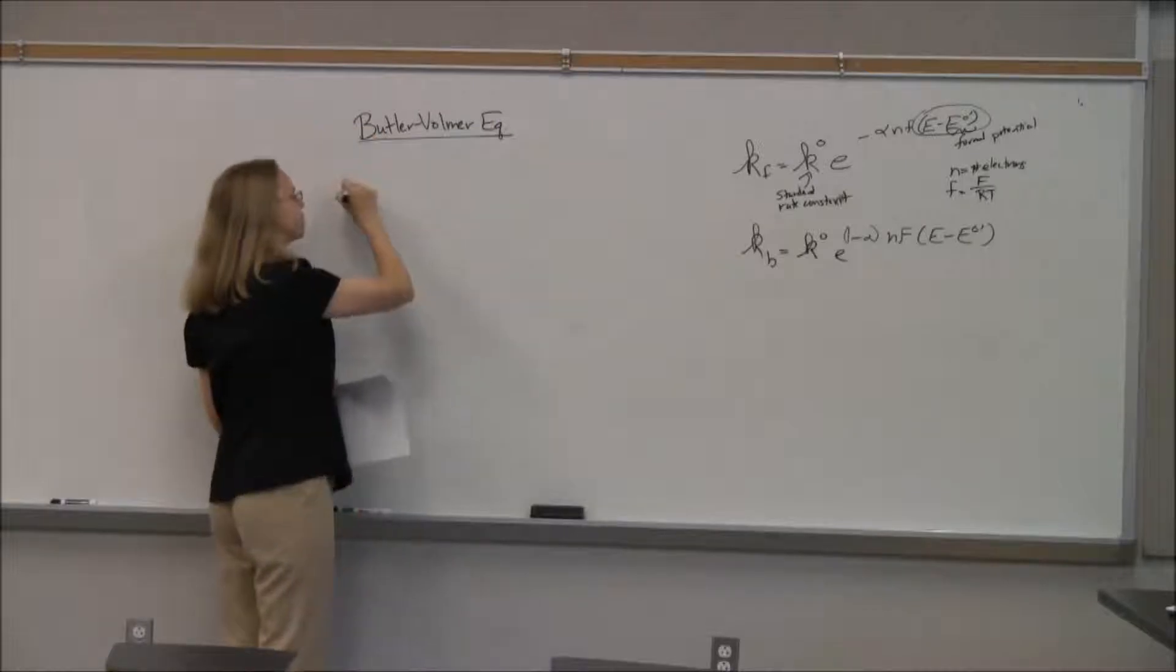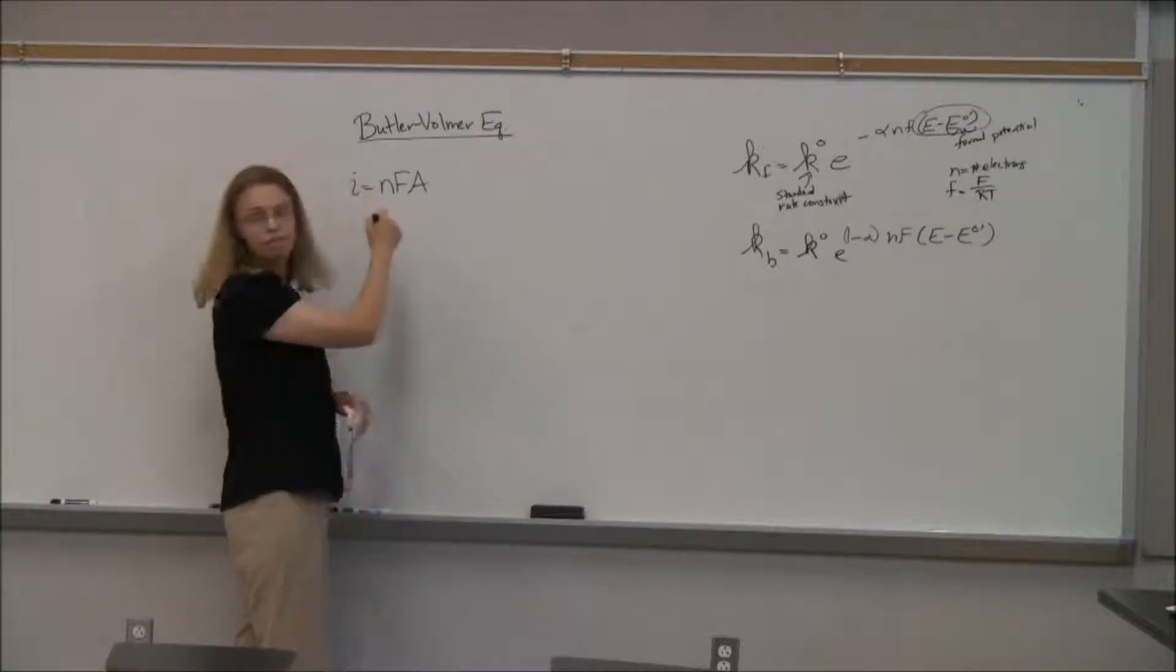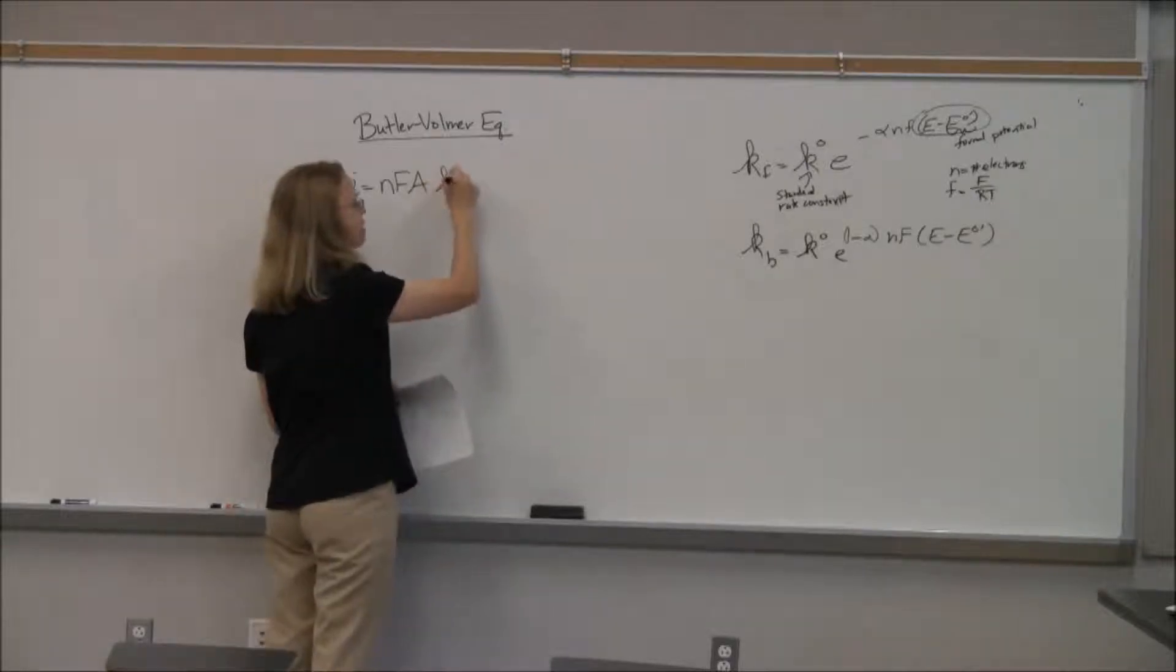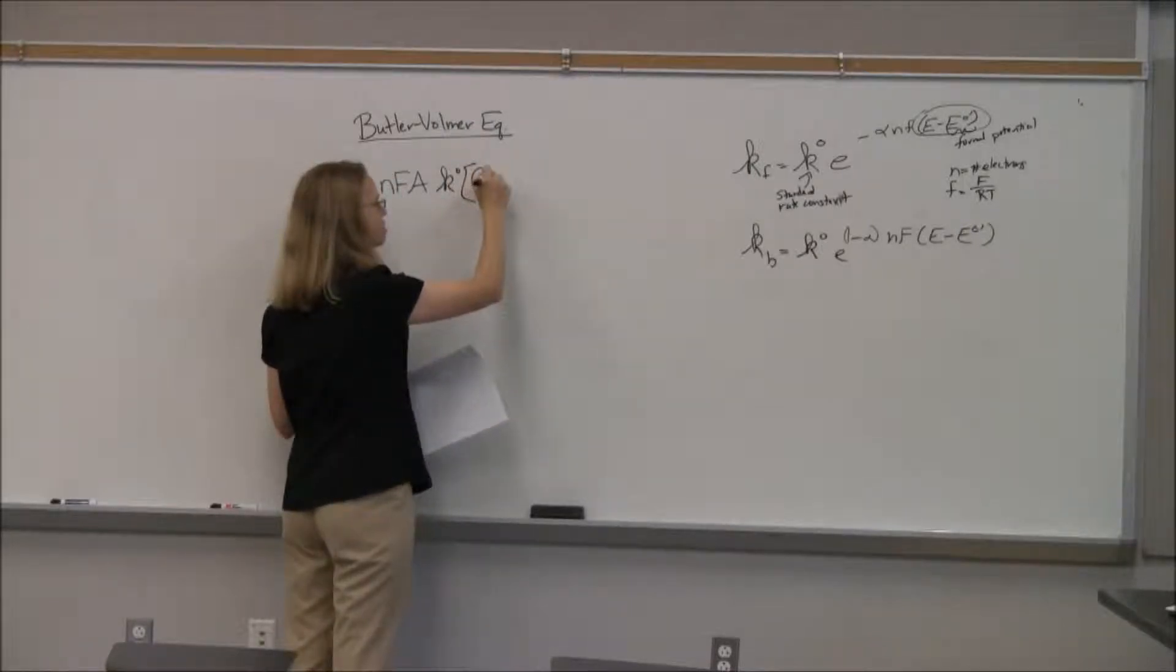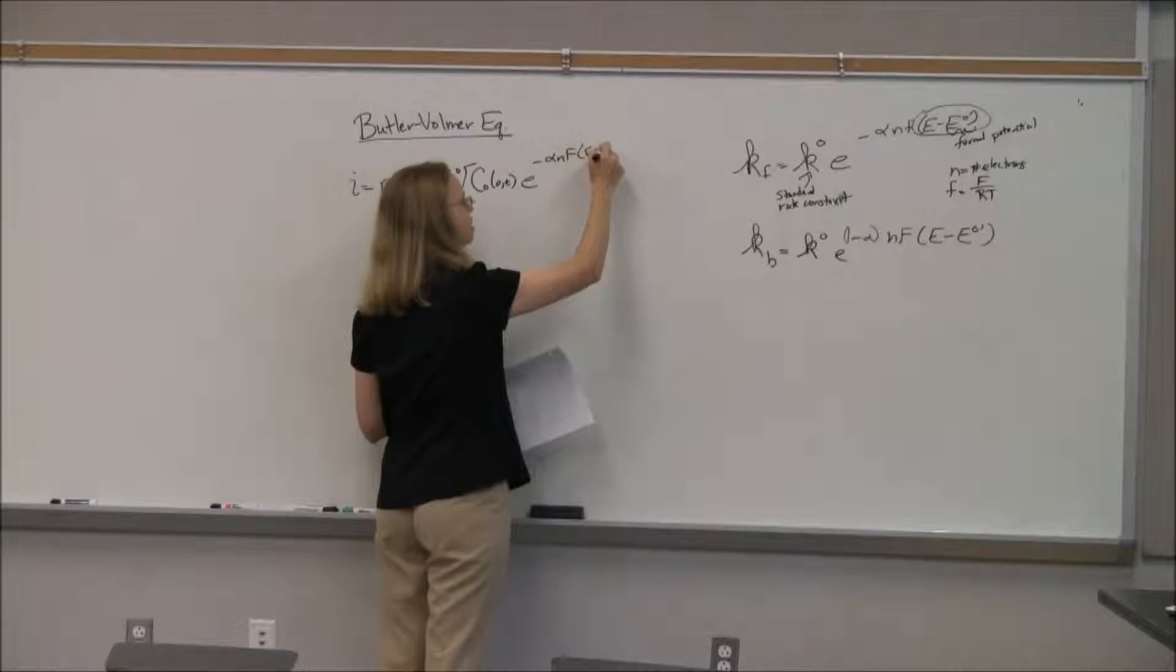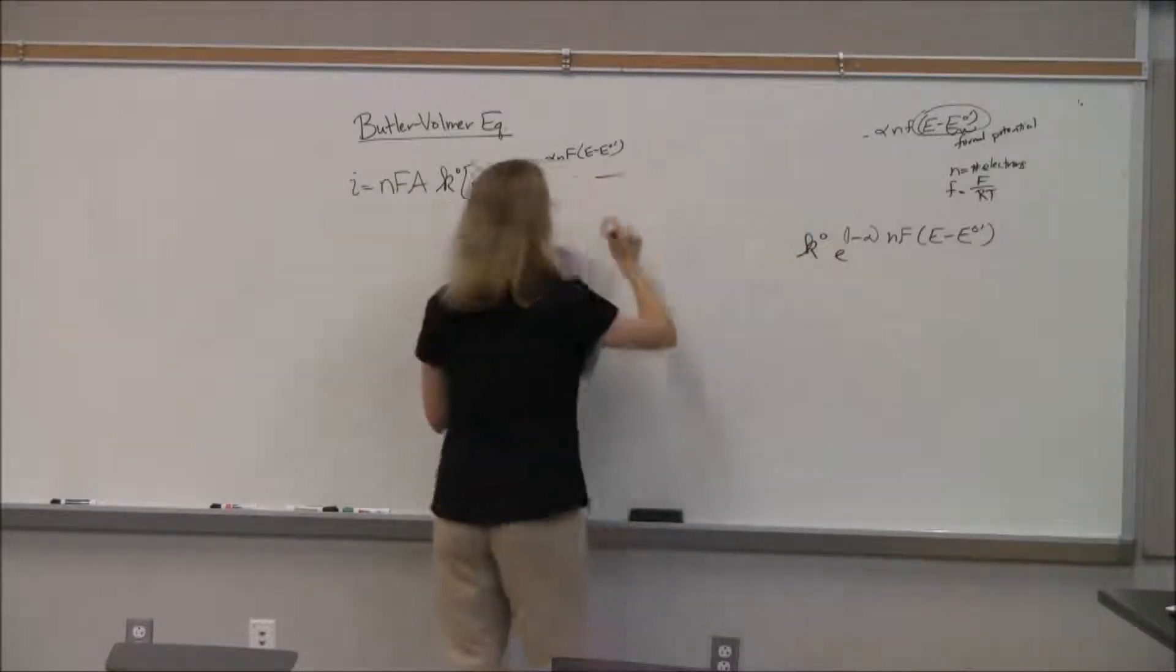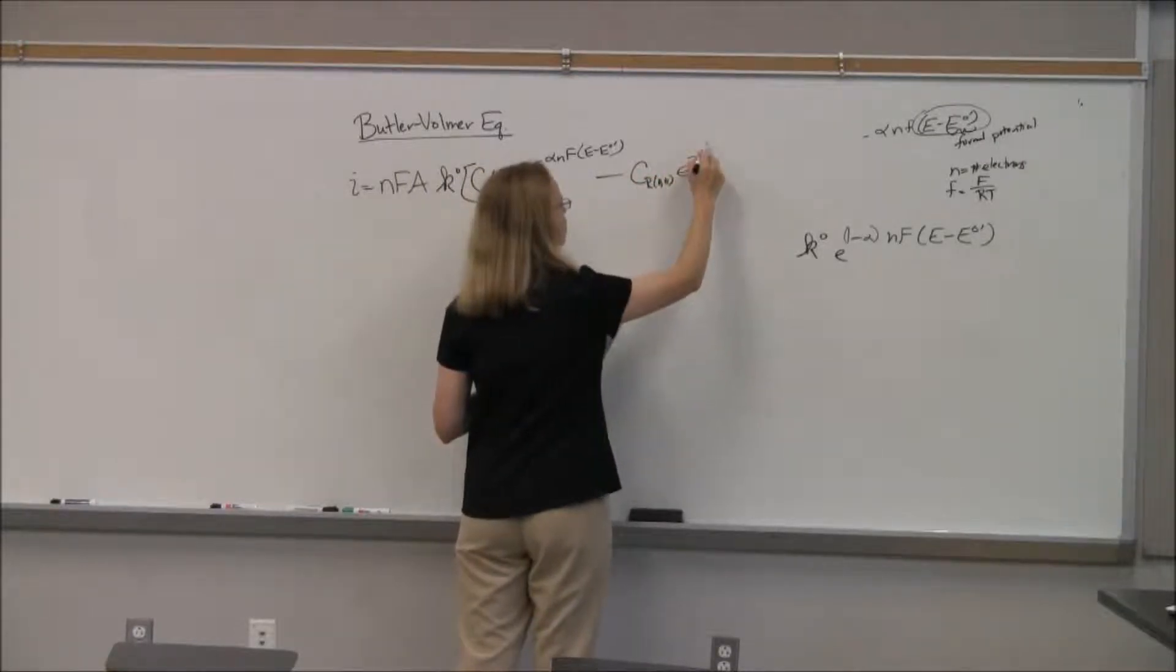So if we were to put these together and solve for i, so I'm just putting them together and going back into this kind of V forward minus V backwards kind of thing and solve for i. It would take me like 30 steps to do it, so you could follow it. So this is where we can skip it a little bit, but you could do it. We have all the pieces. We're going to get an equation that's called the Butler-Volmer equation.